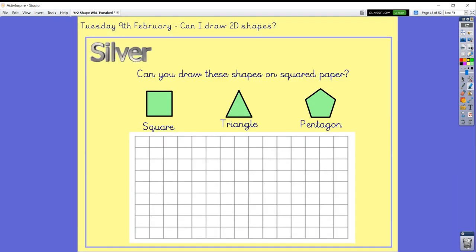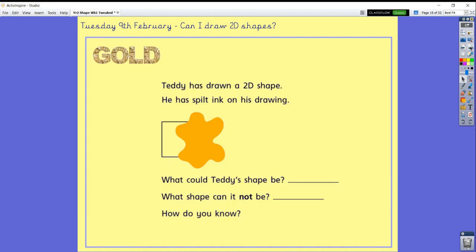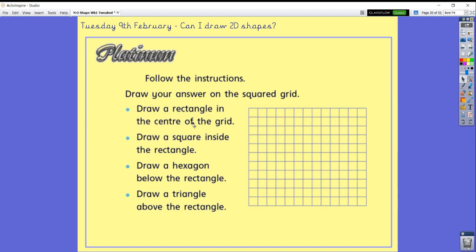Let's have a think of your activities today. A really simple activity to start. Can you have a go at drawing a square, a triangle and a pentagon onto your squared paper? Have a look at the properties and use the squares on your paper to help you. We have then got, oh no, Teddy has accidentally dropped some paint or some ink on his shape. I wonder what shape it could be. What clues are there and how do you know? And finally, can you follow the instructions? Make sure your piece of paper is the same number of squares as big as this one. Can you follow the instructions to create this picture? Looking forward to seeing all your shapes on Dojo later. Have a great day.